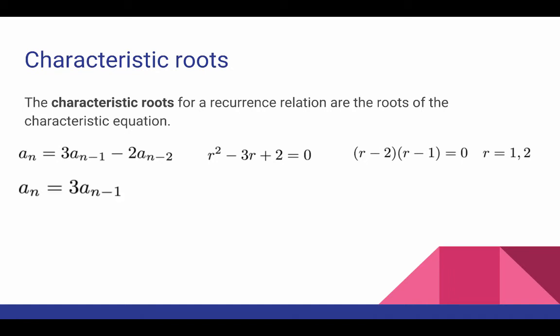In that simple first order example from the last slide, we have this characteristic equation. And so obviously the characteristic root, there's only one of them this time, is r equals three. Again, there's only one of these because this was a first order recurrence relation.